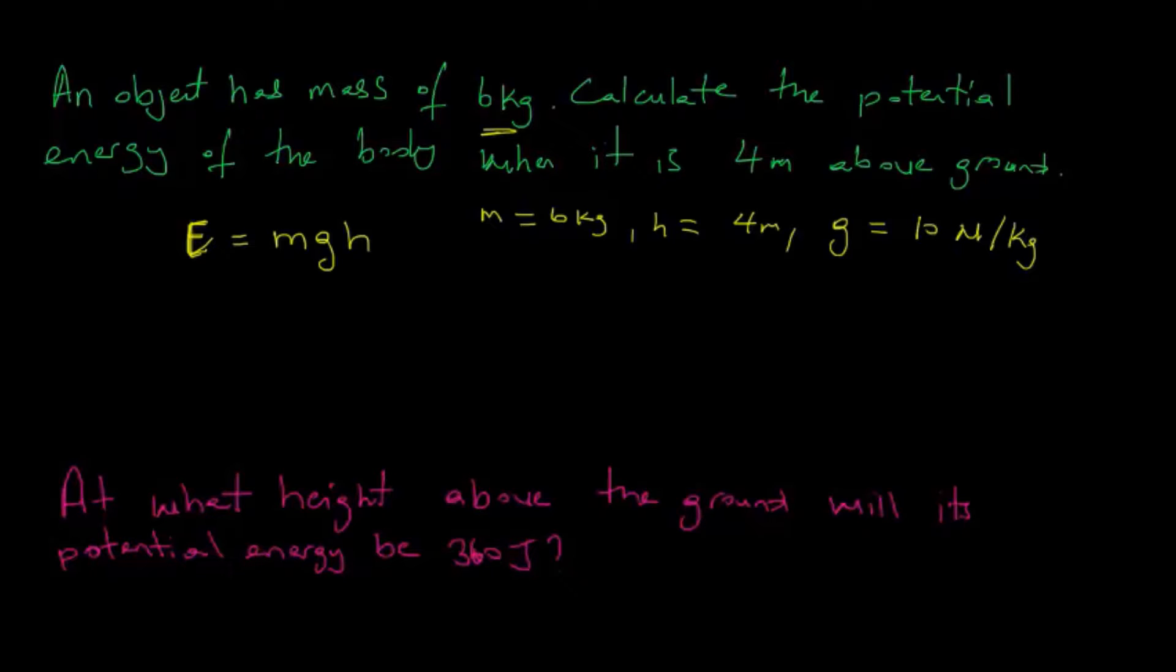So first of all, the mass is 6 kilograms multiplied by gravity, 10 newtons per kilogram, and multiplied by the height of 4 meters. So this works out to be 6 times 10 gives us 60, times 4 gives us 240 newton meters.